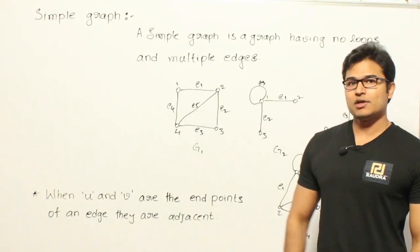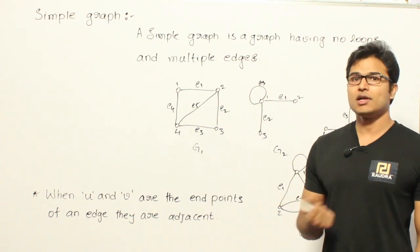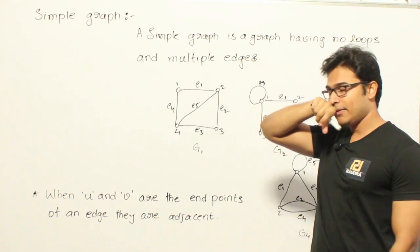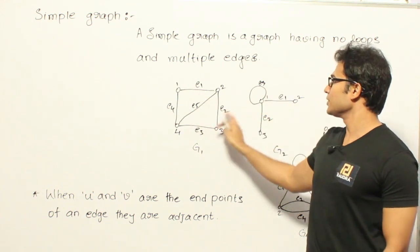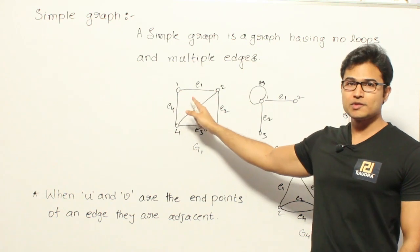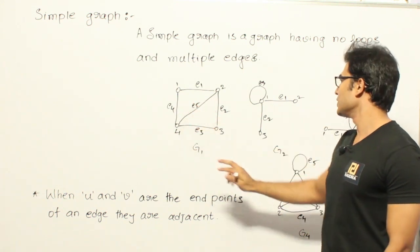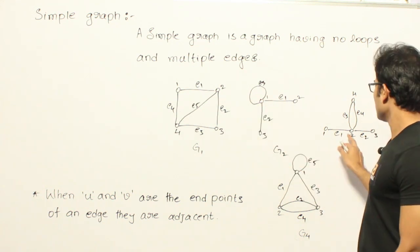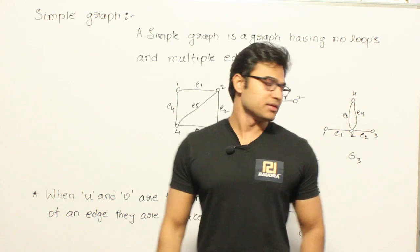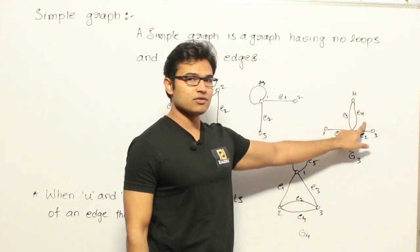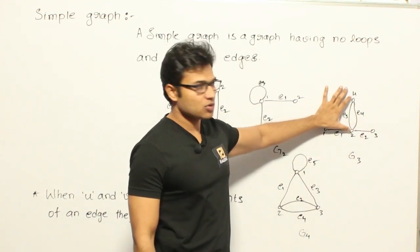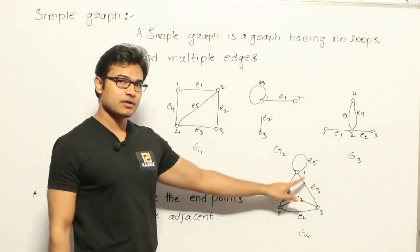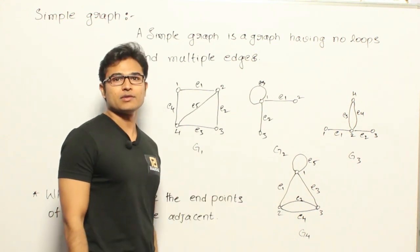If a graph has no loops and no multi-edges, then it is called a simple graph. Graph G1 is simple because it has neither loops nor multi-edges. A graph with a loop is not simple, and a graph where E3 and E4 are both between 2 and 4 is also not simple due to multi-edges.